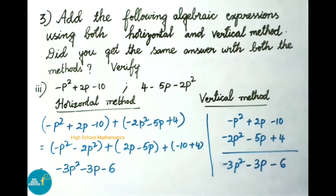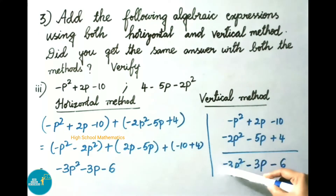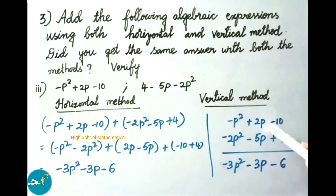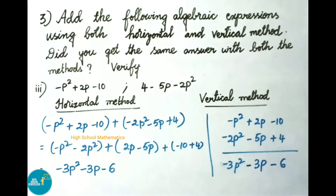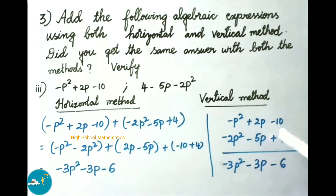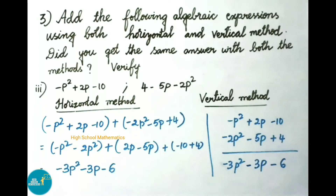See now the vertical method. Writing minus p square plus 2p minus 10 and the second expression in standard form minus 2p square minus 5p plus 4. For minus p square minus 2p square: both same sign, keep minus, p square plus 2p square is 3p square. For plus 2p minus 5p: opposite signs, 5p is greatest with minus sign, 5p minus 2p is 3p, so minus 3p. For minus 10 plus 4: opposite signs, 10 is greatest with minus sign, 10 minus 4 is 6, so minus 6. Final answer is minus 3p square minus 3p minus 6. In both methods we got the same answer.